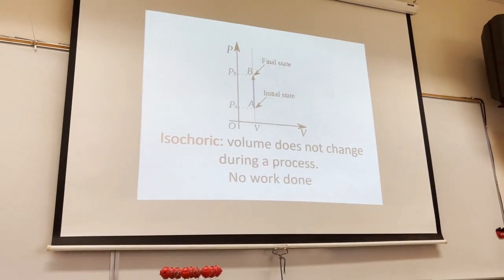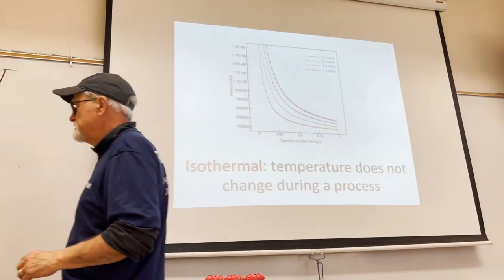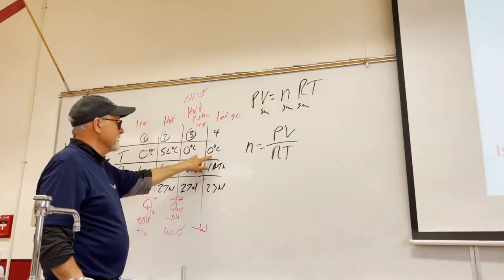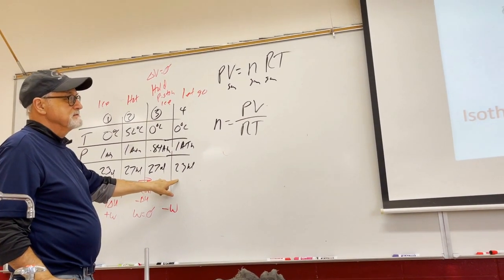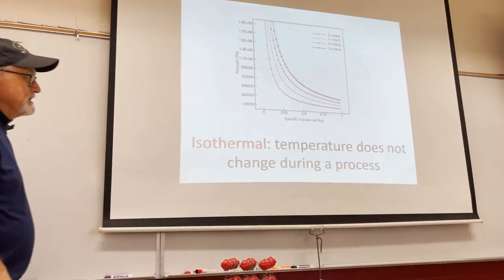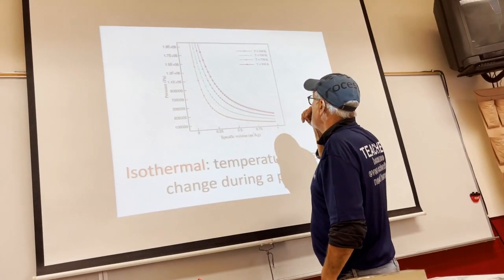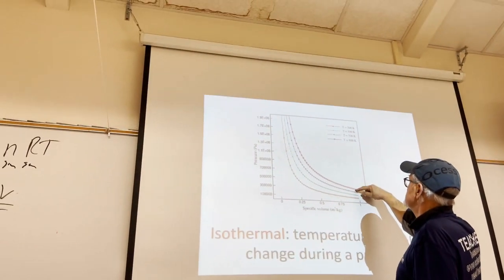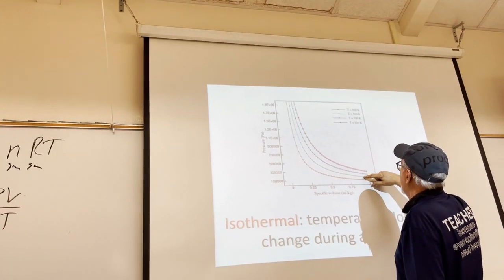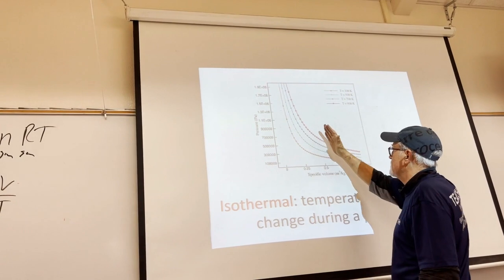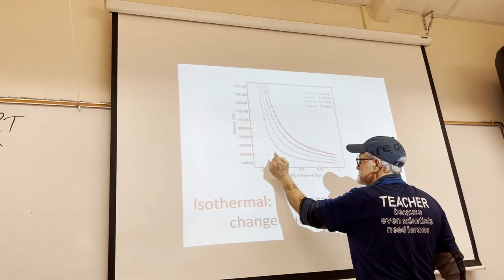What happens to the temperature in the process from state three to four? The temperature doesn't change — we were in the ice, we just let go of it — so we had an isothermal process. There is a characteristic shape to an isotherm on a PV diagram. At different temperatures — 300 K, 500 K, 700 K, 900 K — each isotherm has its own curve.